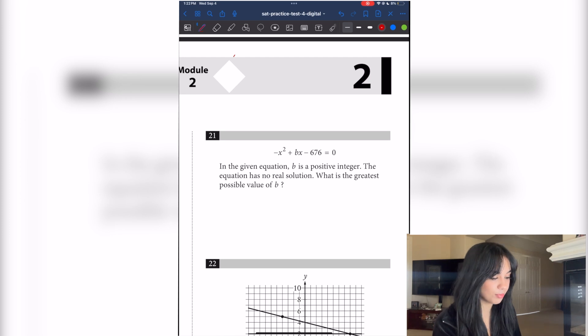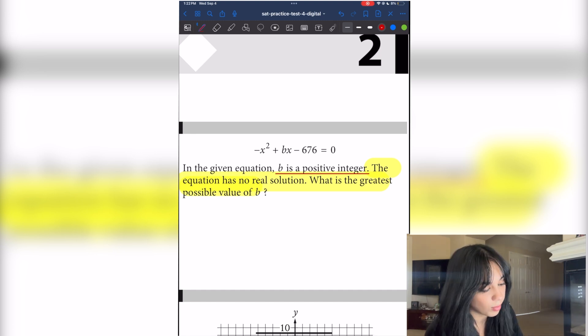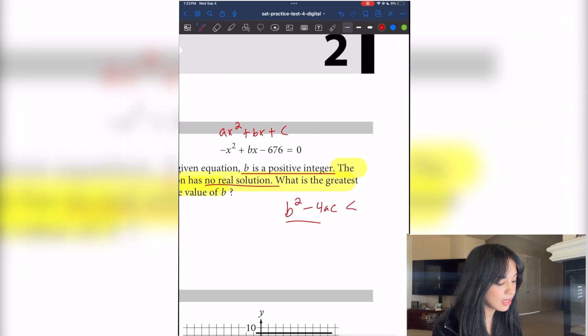So we now have the equation in front of us. It reads negative x squared plus bx minus 676 equals 0. In this given equation, b is a positive integer. And then it also says the equation has no real solution. What is the greatest possible value of b? So quite honestly, all of this information is crucial. Off the bat, I'm noticing that our equation isn't in factor form. It is in standard form, which is ax squared plus bx plus c. And it says that the equation has no real solution. So that means that the discriminant is less than 0. It is negative, which is b squared minus 4ac.